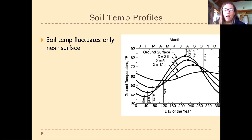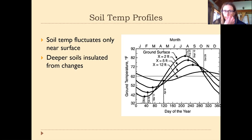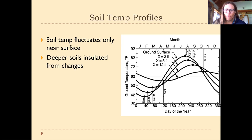Generally, the closer you are to the surface of the soil, the more fluctuation in temperature occurs — the soil is closer to mimicking the atmosphere. The deeper down you go, the more disconnected the soil is from what's going on in the environment. Deeper soils are essentially insulated from atmospheric temperature changes, and there's a lag time — the deeper you are, the longer it takes for a temperature change to occur.